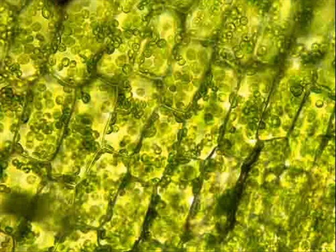Here are my Elodea cells viewed at 400 times their actual size. They're big rectangles. I can see the cell walls and the chloroplasts. The chloroplasts are the round green bodies within the cell.